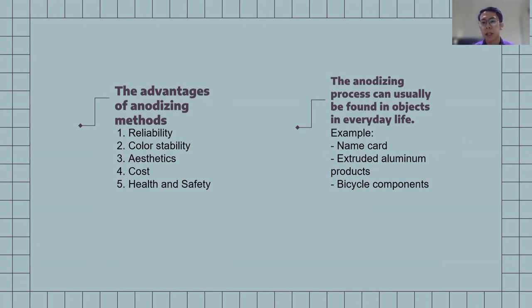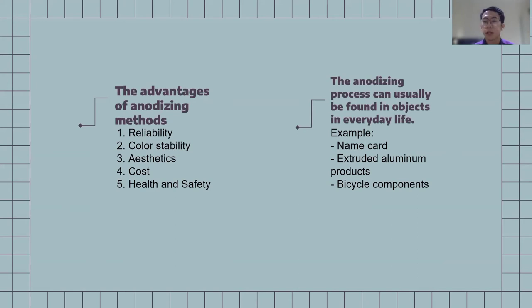The anodizing process can usually be found in objects in everyday life. For example, in name cards and physical components — such as for coloring the saddle and coloring the frame, we can use anodizing.